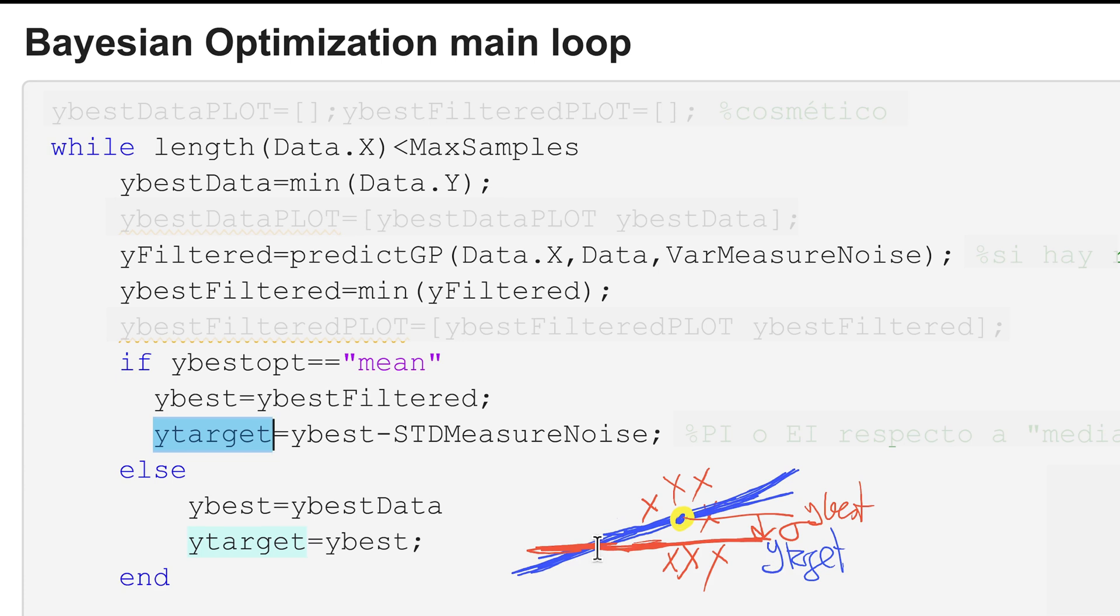We get either true measurement or filtered measurement as my best sample, and then I get a target level for improvement that can be just the same as y best or this filtered stuff y best minus one measurement noise. Of course you can tweak it. This is the selection of my best sample.